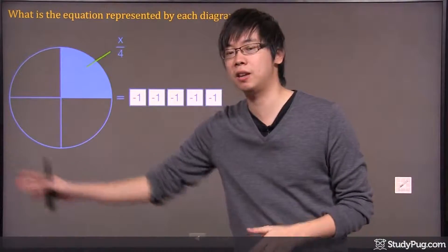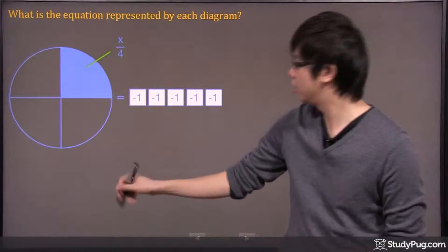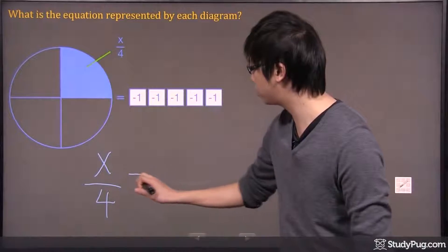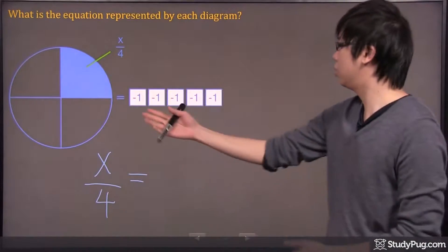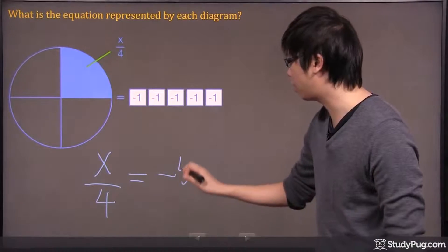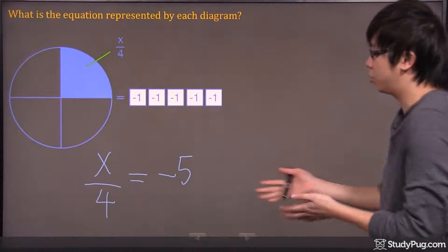As you can see on this left hand side, you get this x over 4. Basically, what we have here is x over 4 and it's simply equivalent to... I see a negative 1 and there's 5 of them. So take a look, we got a negative 5 in total. That's pretty much what the equation represents.